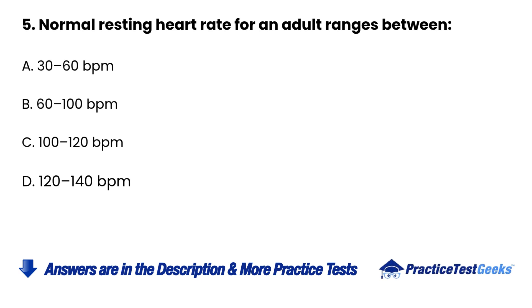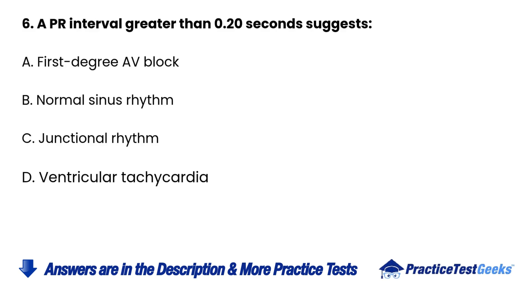5. Normal resting heart rate for an adult ranges between: A. 30 to 60 BPM. B. 60 to 100 BPM. C. 100 to 120 BPM. D. 120 to 140 BPM.